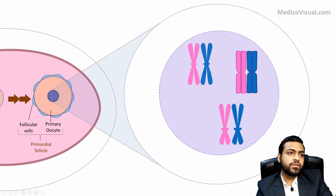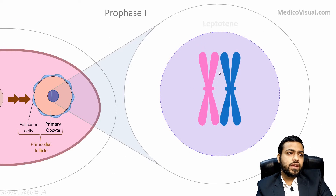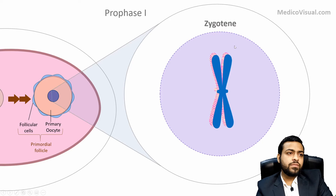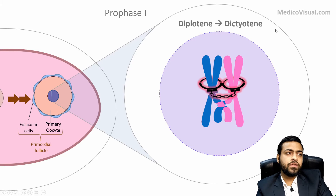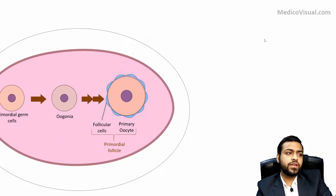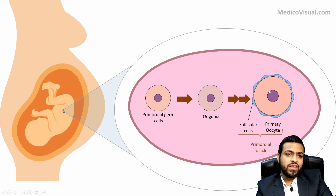This primary oocyte starts the process of meiosis and proceeds through prophase 1, including crossing over, reaching up to the diplotene phase. It is then arrested in the diplotene phase and does not complete meiosis — this resting state is called the dictyotene phase. It remains arrested until the start of puberty. The nucleus of this primary oocyte fills with water, swells up, and is now called the germinal vesicle, which protects it from harmful substances.